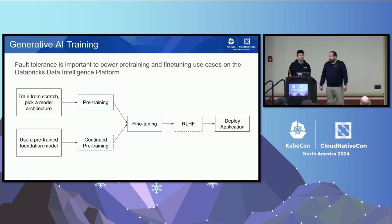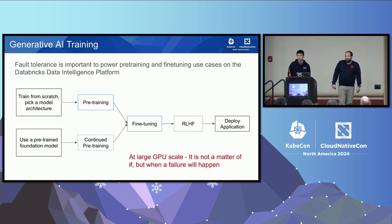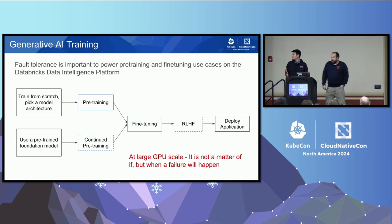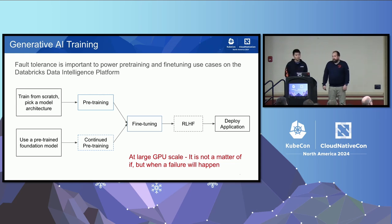ML pre-training workloads shift the scale to thousands or even tens of thousands of GPUs in some cases. At such scale, failure is not a matter of if, but when. Fine-tuning lowers the need — if you're just doing a fine-tuning job, depending on the size of the model, this is 10 to 100 GPUs. In any case, you need large, reliable clusters to run production workloads across many nodes.